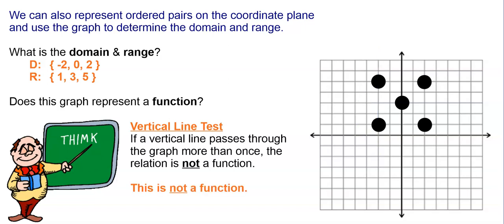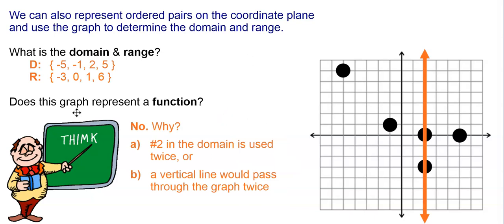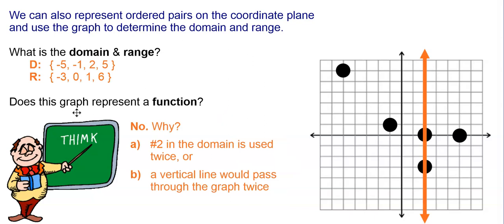Hit pause and determine the domain and range of this one, and determine if it is a function. Again, the domain is just the x values, the range is the y values, and this is not a function because number two is used twice in the domain, or another way to look at it is a vertical line would pass through the graph twice.